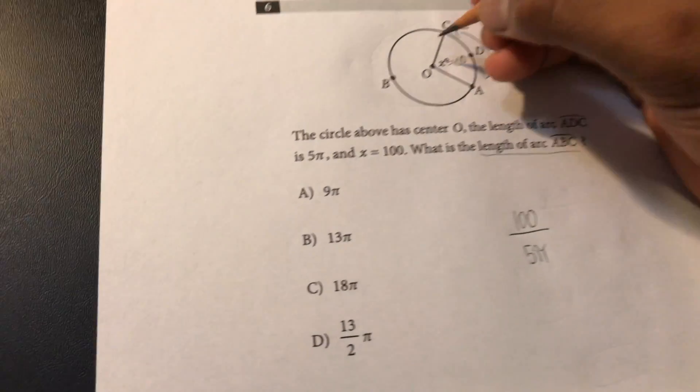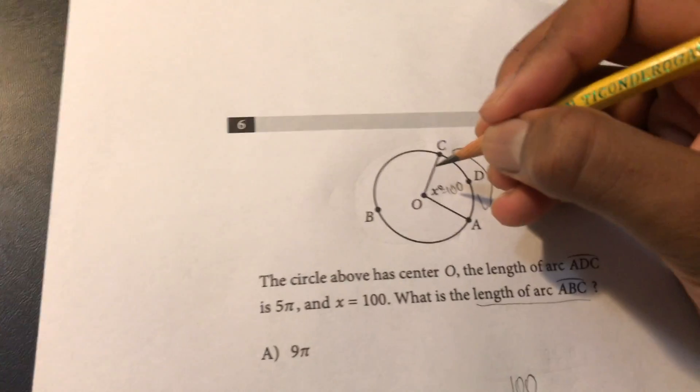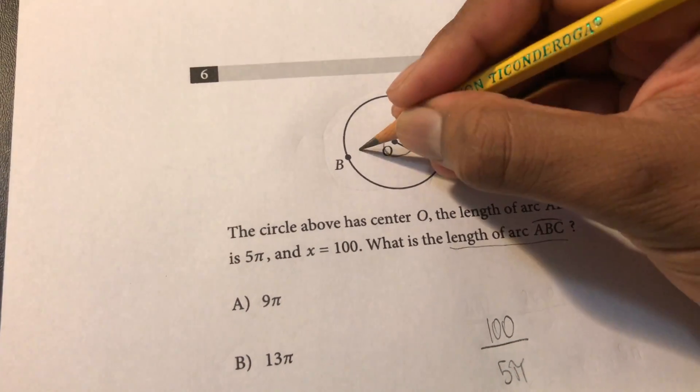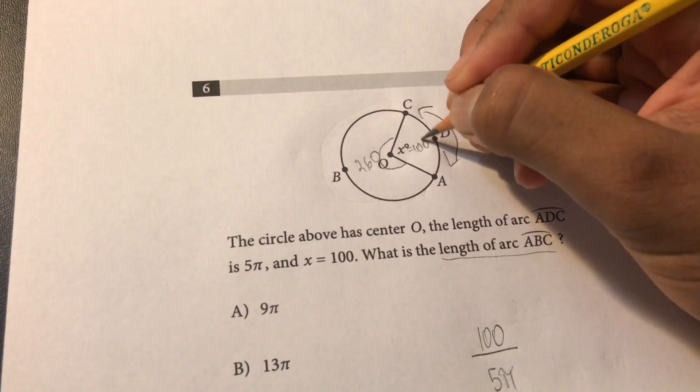And we know that in a circle there's a total of 360 degrees so we know that the rest of this part has to be 260 because we already have 100 here.